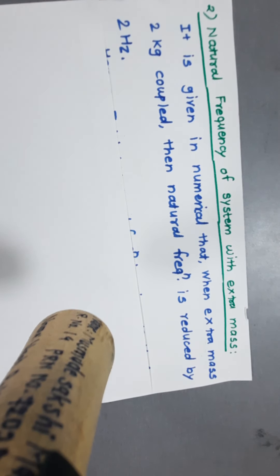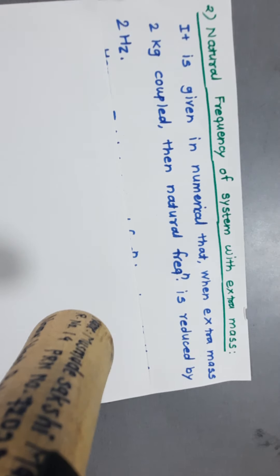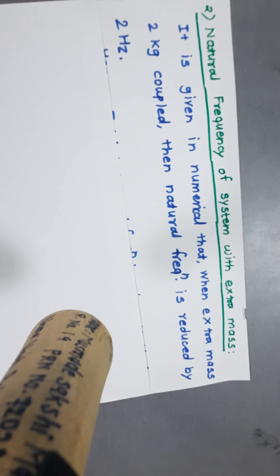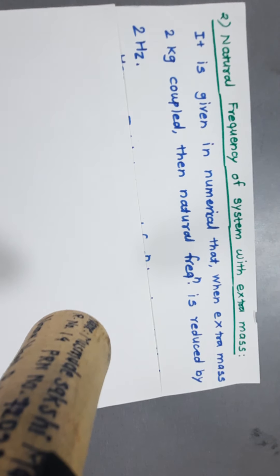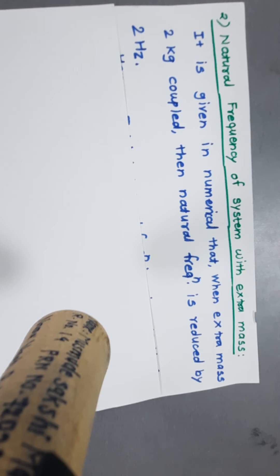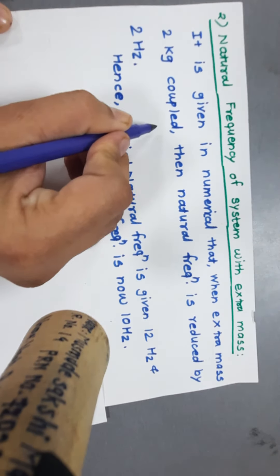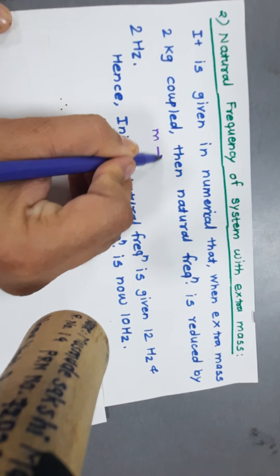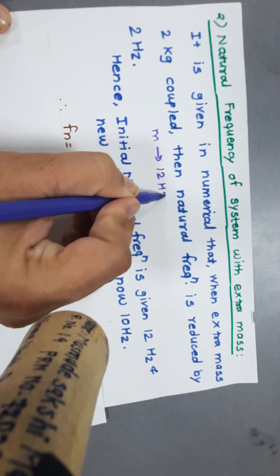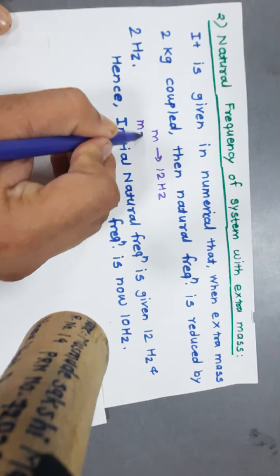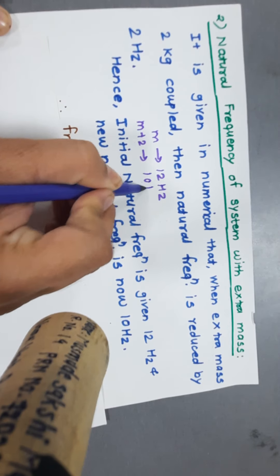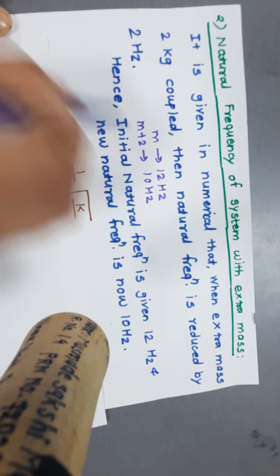It is given in the problem that when an extra mass of 2 kg is coupled with mass m, the natural frequency is reduced by 2 Hz. So when the mass is m, the natural frequency is 12 Hz, and when the mass becomes m + 2, the natural frequency is 10 Hz.